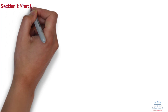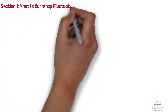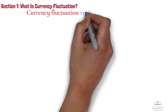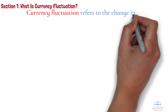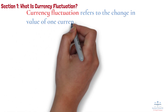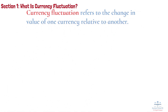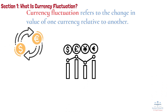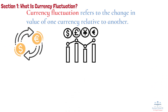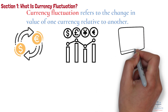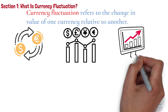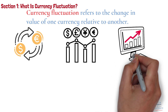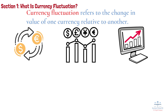Section 1: What is Currency Fluctuation? Currency fluctuation refers to the change in value of one currency relative to another. This change is often represented through exchange rates, which tell us how much of one currency is needed to buy a unit of another. These rates are constantly in flux because of various factors that affect the supply and demand for a particular currency.